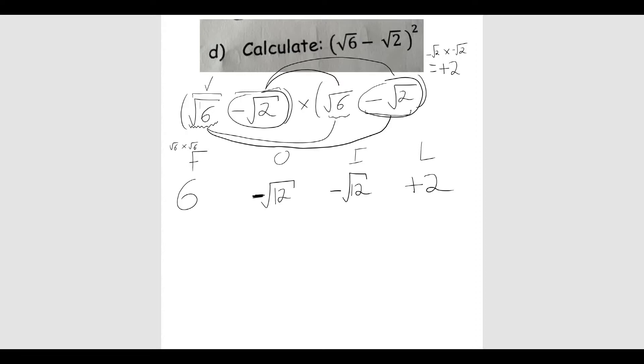So what I'm going to do now is collect the number terms together. 6 plus 2, which is 8. And I've got minus root 12 take away root 12, which is minus 2 root 12. We can leave our answer like that. You could simplify the root 12 further, but I'm happy with that.